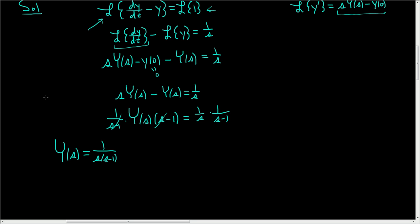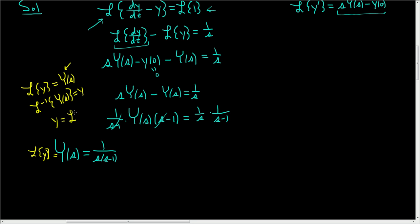Now recall that the Laplace transform took y and sent it to big Y of s. That means the inverse Laplace transform takes big Y of s and sends it back to y. So the inverse Laplace takes big Y and sends it back to little y. Since big Y of s is the Laplace transform of y, all we have to do is take the inverse Laplace of big Y to find y. So you take the Laplace transform of both sides, apply initial conditions, solve for big Y, then find the inverse Laplace and you're done.